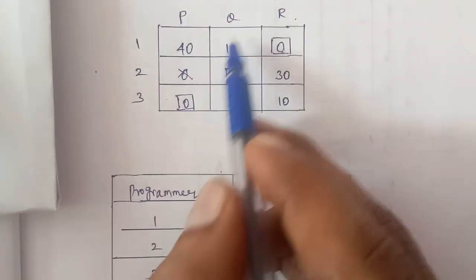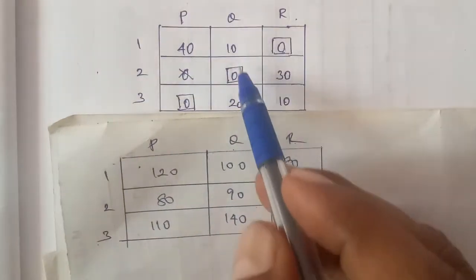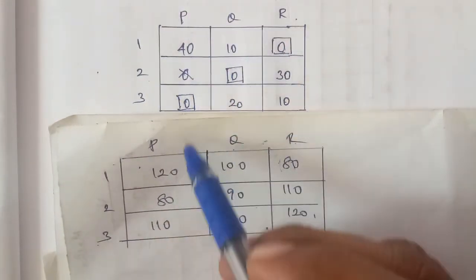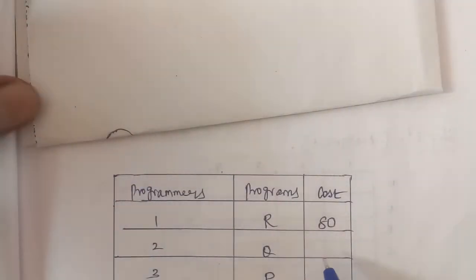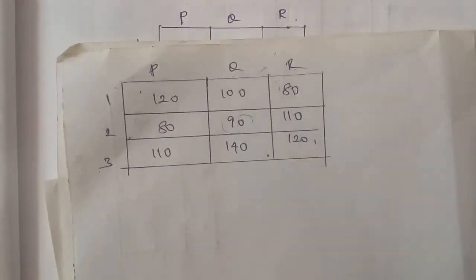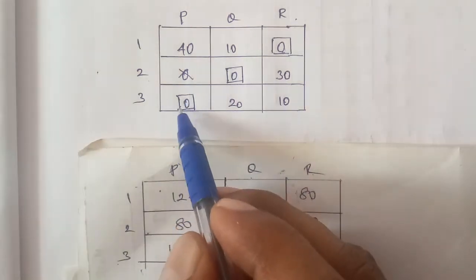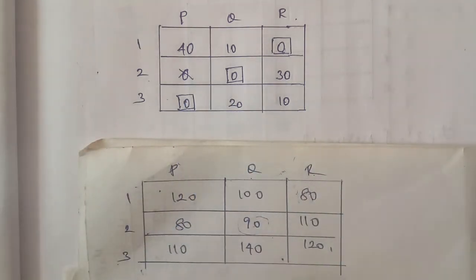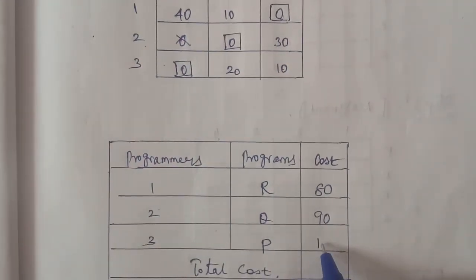Next box number 2 to Q, value is 90, so 90 entry. Next box number 3 to P, value is 110, so 110 entry.